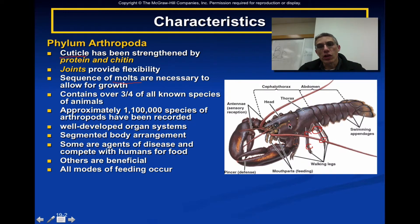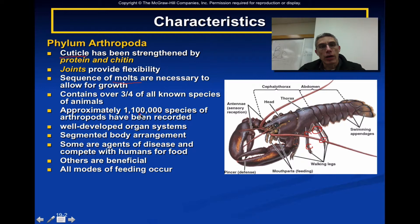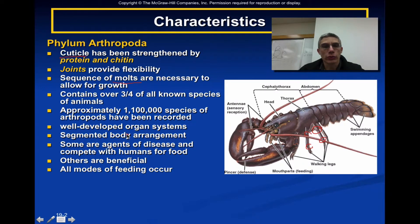A soft exoskeleton lies right beneath the old one and hardens up after a period of time to form a brand new skeleton. This particular group contains over three-fourths of all known animal species on this planet — approximately over one million arthropod species have been recorded. They do have a very well-developed organ system. When we go into lab, we'll primarily look at the chelicerates, including a horseshoe crab and a garden spider.